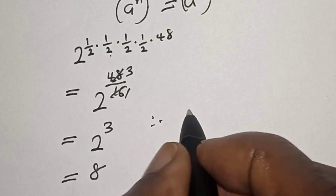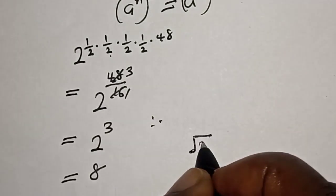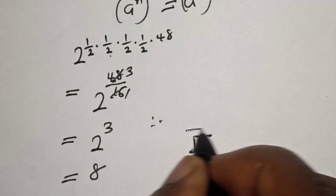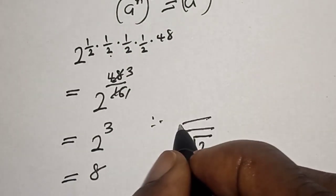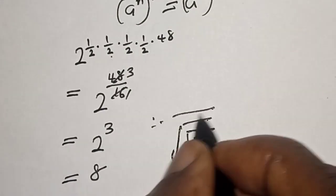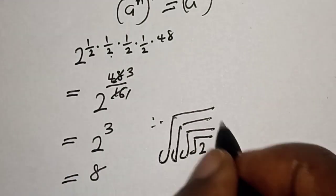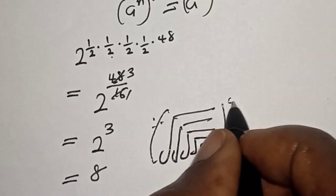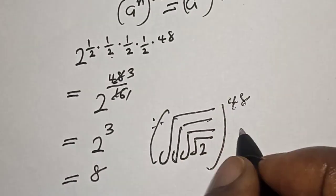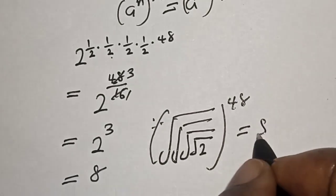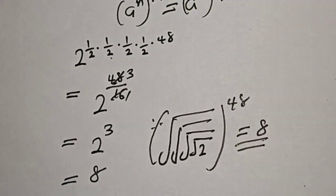Therefore, root of 2, then with another root, with another root, with another root, with another root — all raised to power 48 is equal to 8. That is our final answer.